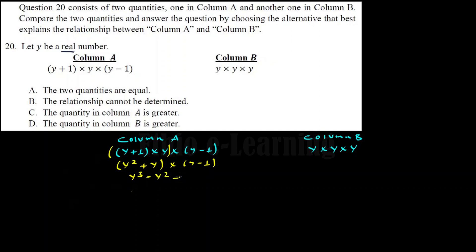Continuing the simplification: Y squared times Y gives Y cubed, minus Y squared plus Y times Y gives Y squared, plus Y times 1 gives Y. After combining like terms — minus Y squared and plus Y squared cancel — Column A simplifies to Y cubed minus Y. Column B simplifies to Y times Y times Y, which is Y cubed.